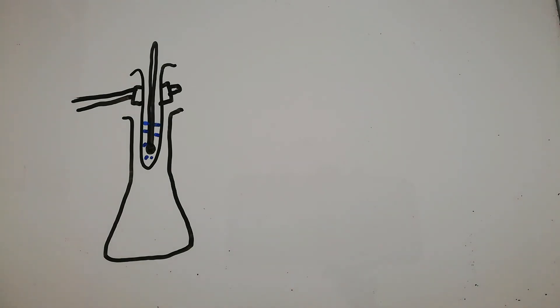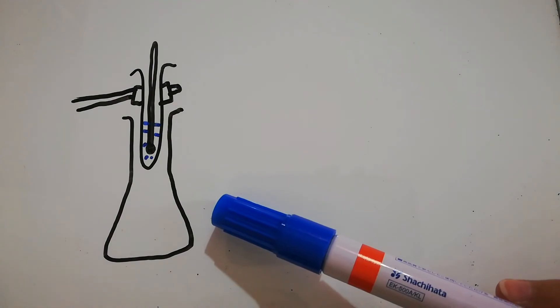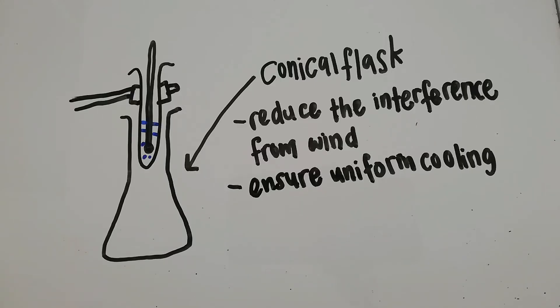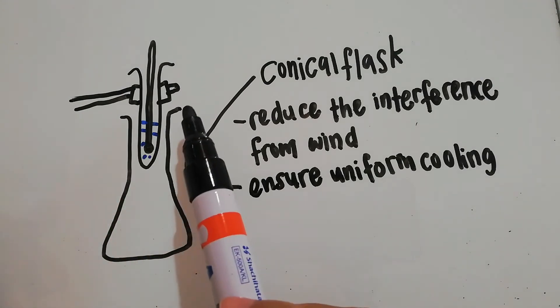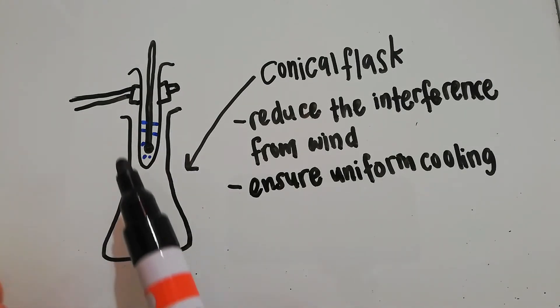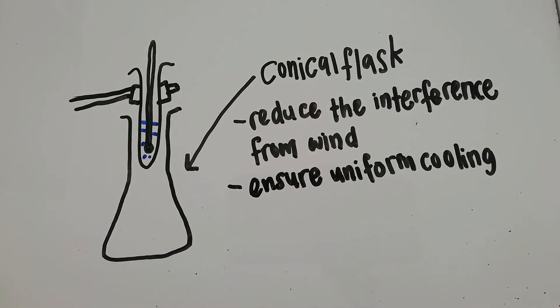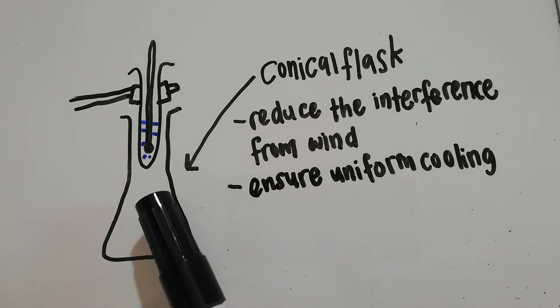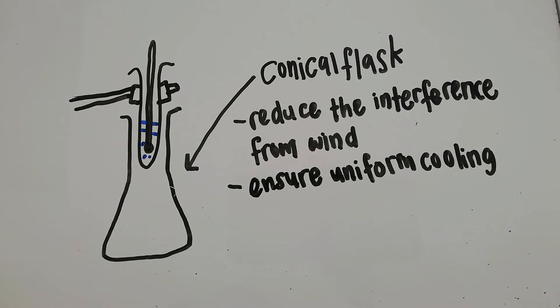I want to stress the function of the conical flask first. The function is to reduce the interference from wind outside the test tube and to ensure uniform cooling, because the air trapped in the conical flask can act as poor conductor of heat. The substance also needs to be stirred to ensure uniform cooling.